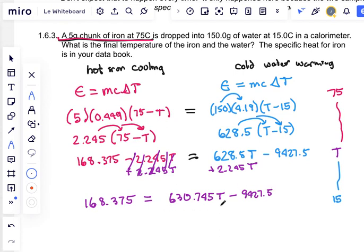If we want our T's alone, we need to get rid of this minus 9,427.5. So add that to both sides. Plus 9,427.5, plus 9,427.5. These cancel.